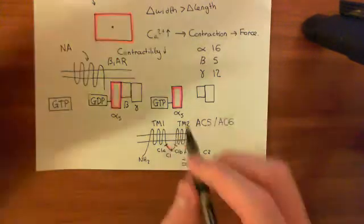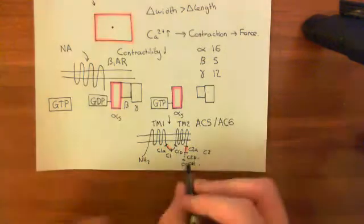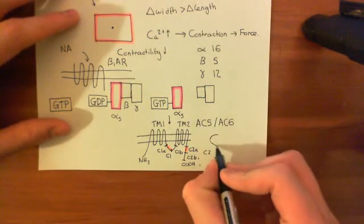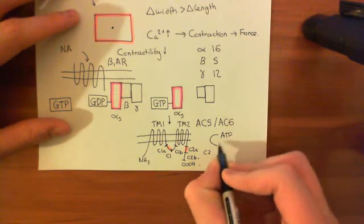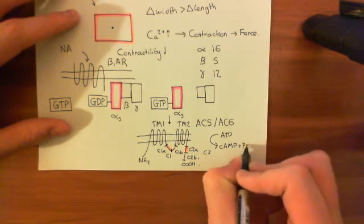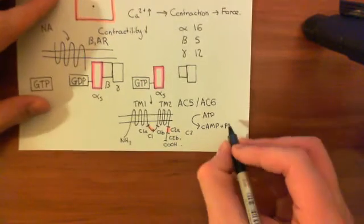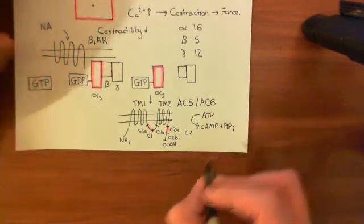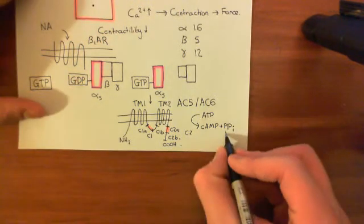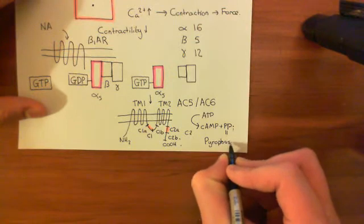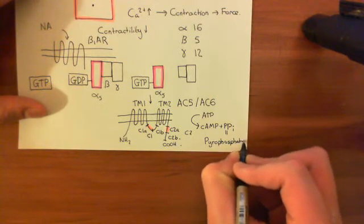What does this enzyme do? Activated by the alpha-S·GTP subunit — which promotes dimerisation of C1A and C2A — it takes in adenosine triphosphate (ATP) and converts it into cyclic AMP and pyrophosphate (PPi). Note: the byproduct is pyrophosphate — two phosphate groups bound together — not inorganic phosphate.